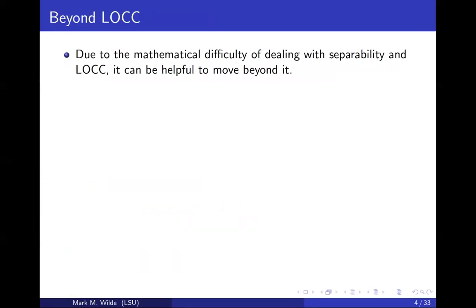We talked earlier about how LOCC is difficult to deal with mathematically. In fact, deciding whether a quantum state is separable or entangled is an NP-hard problem. If you're given a mathematical description of a quantum state as a density operator — you write down all the numbers in the matrix — it's known that solving this problem is NP-hard. So as the dimension of the state gets larger and larger, according to computational complexity conjectures strongly believed to be true, there will not be a polynomial time algorithm that can decide if a quantum state is separable or entangled.